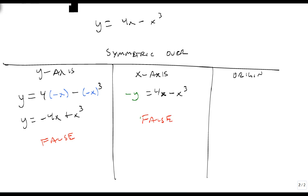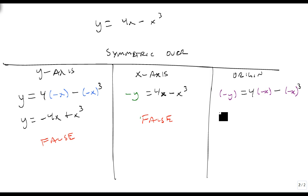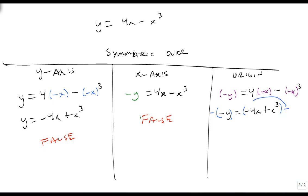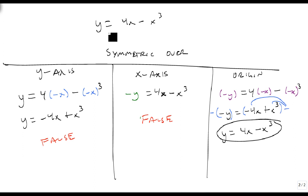For the origin test, we replace both x and y: -y = 4(-x) - (-x)³. That gives us -y = -4x + x³. This doesn't look the same as the original, but if we multiply both sides by -1: y = 4x - x³. Notice that this is exactly the same as the original equation. So this is, in fact, a true statement — this equation is symmetric over the origin.